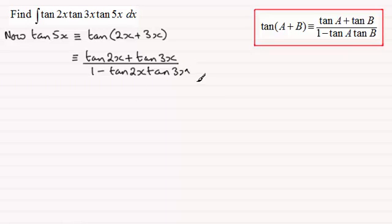Now if I multiply both sides by the denominator here, I can see that I'm going to create a term which is going to be tan 2x, tan 3x, tan 5x later on, which will be identical to this. So that's what I'm going to do here next. I'm just going to multiply both sides by the denominator.